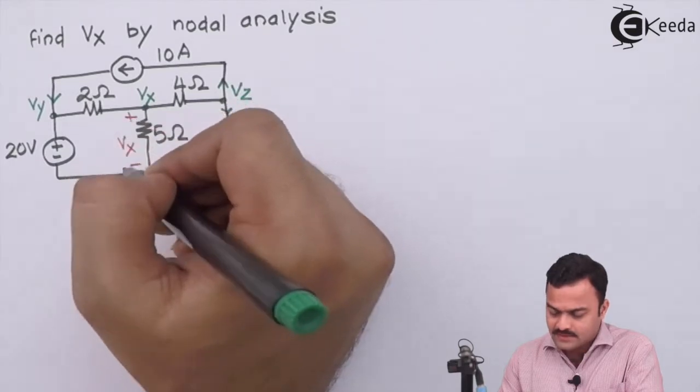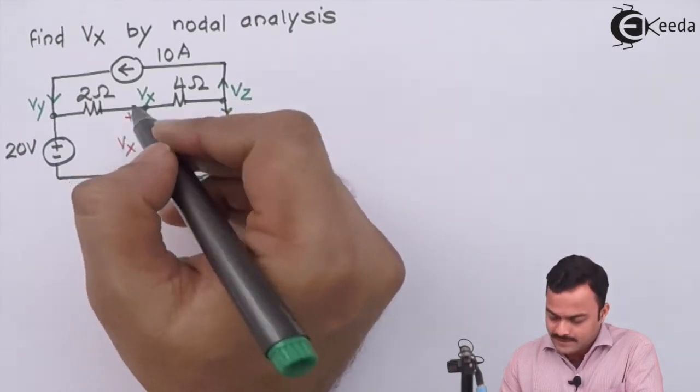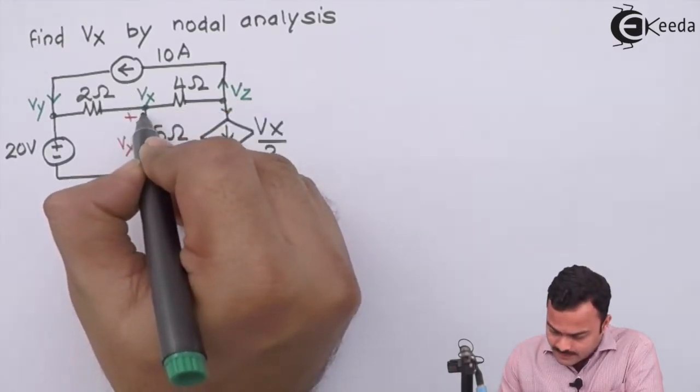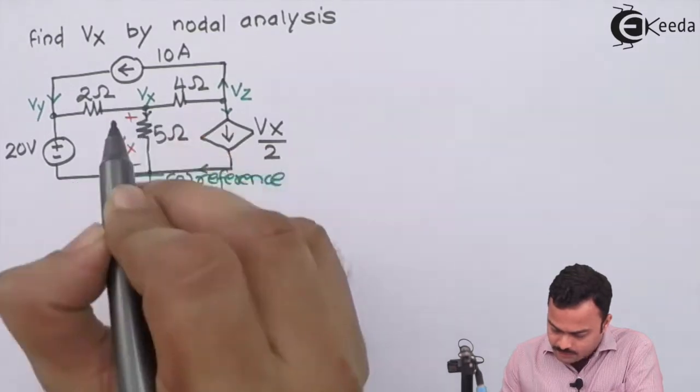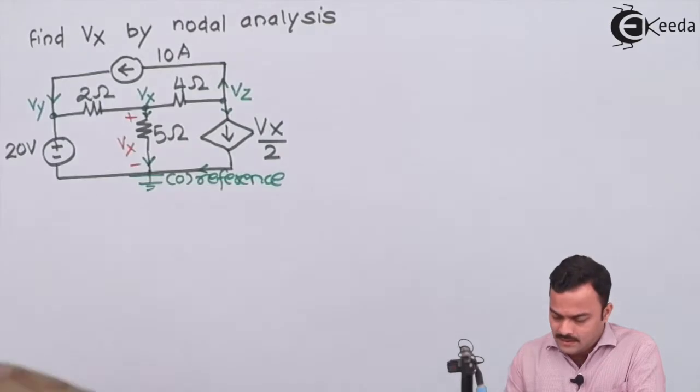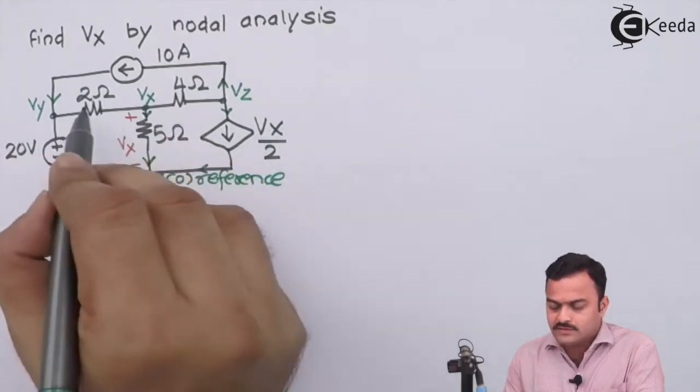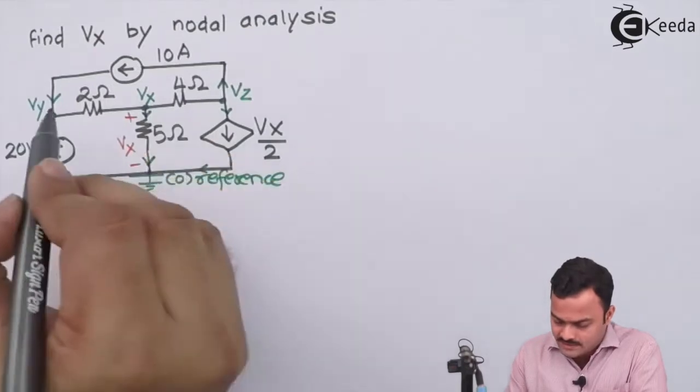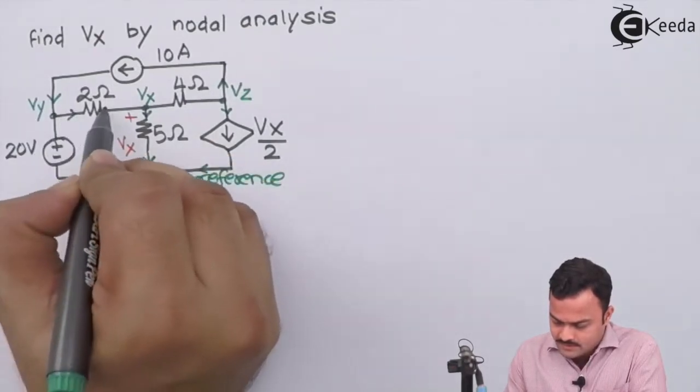Plus we have to take care of this potential also. We have to pass current through five ohm such that the potential will be plus-minus given by them. To maintain that plus-minus, current needs to be passed in this direction only. We are free to mark current direction for these two in a random direction. Let's consider in this manner.